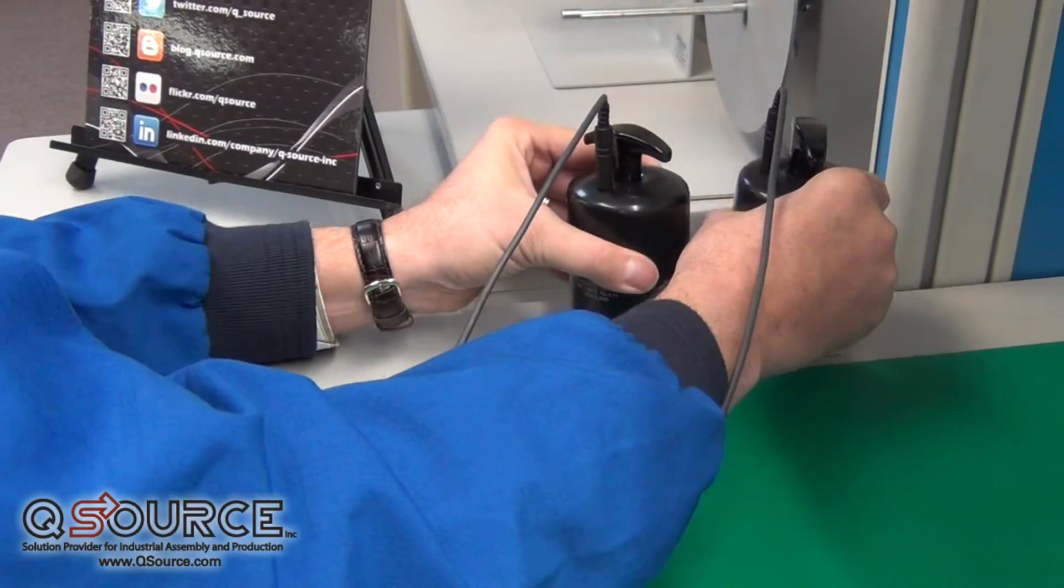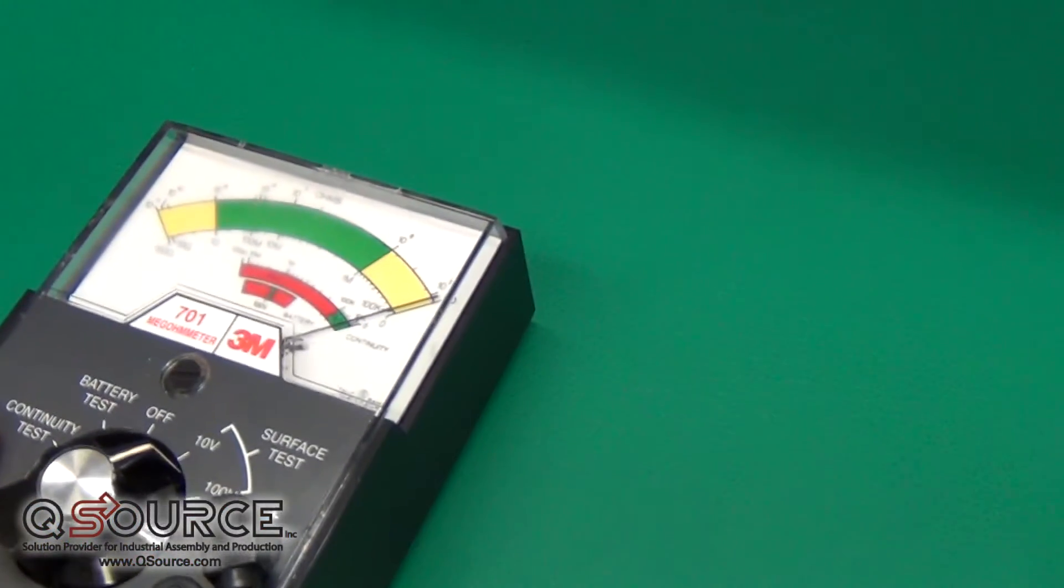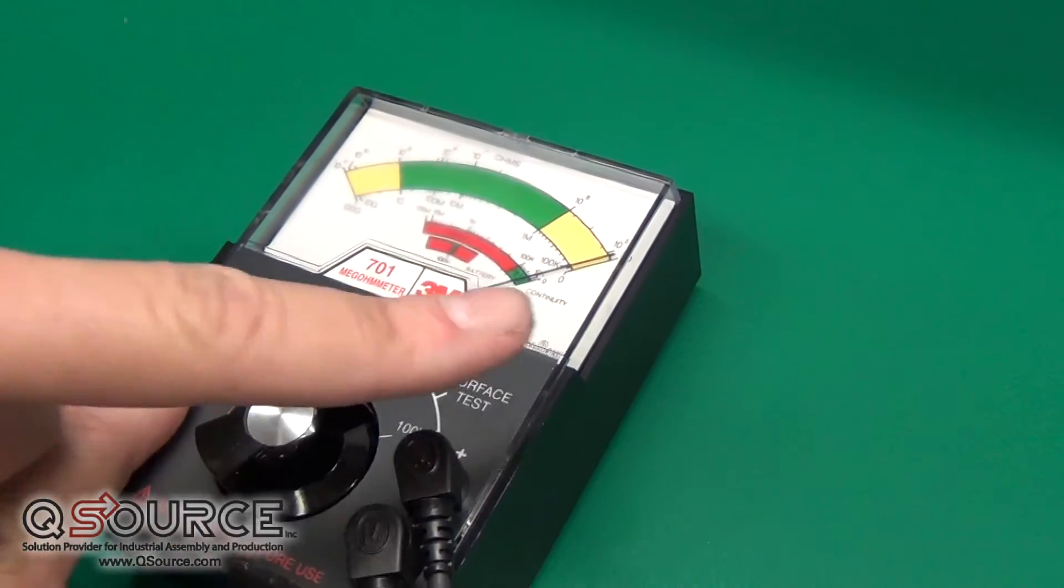To demonstrate that, if I put it on a piece of metal plate and hit the test button, you'll see that the meter is showing it's fully conductive.